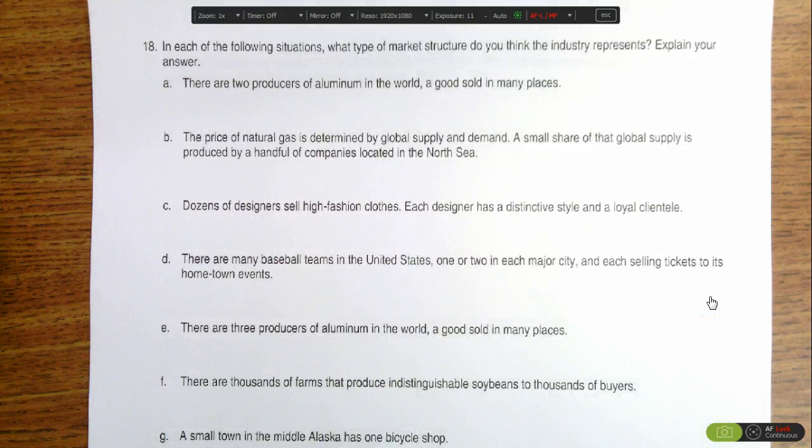Part B says price of natural gas is determined by the global supply and demand. Because it's global supply and demand, it means no one company has control over the price, which means there are many companies or firms in the market which would make it a perfectly competitive market.